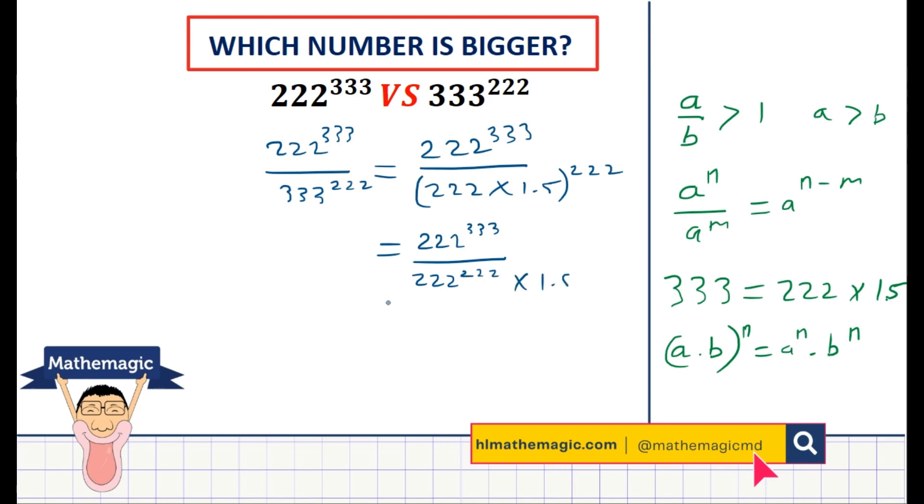So we'll have 222 to the power 333 at the top and at the bottom 222 to the power 222 times 1.5 to the power 222. And using this subtraction law here, we can actually say that 222 to the power 333 divided by 222 to the power 222 will be 222 to the power 111. The exponents will get subtracted. So this is a good thing to do right now. So the result here is 222 to the power 111 divided by 1.5 to the power 222.